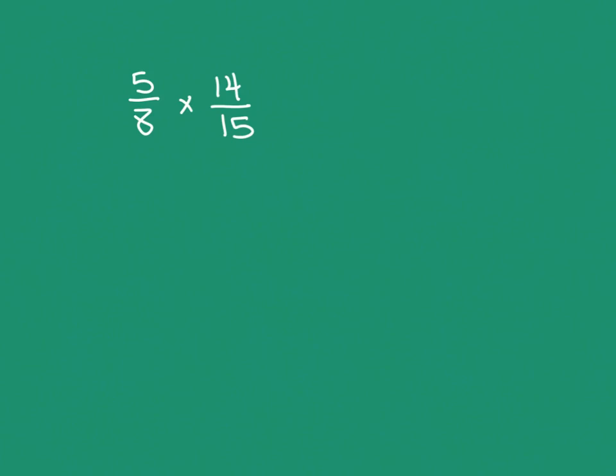Our steps for multiplication: change everything to a fraction — and they both are — then multiply straight across. Actually, I even put in your notes to cross reduce, and that's what this lesson is teaching. Let's reduce before we go into getting something gigantic: five times fourteen is going to be big, and eight times fifteen is going to be even bigger. So let's knock these numbers down. We look at the cross: five and fifteen — is there a number that divides evenly into both? Yes, five does. Five goes into five once and five goes into fifteen three times.